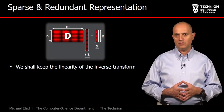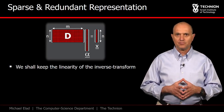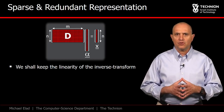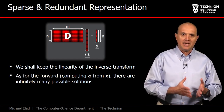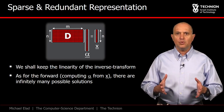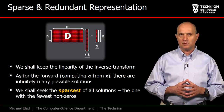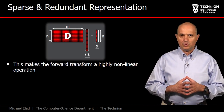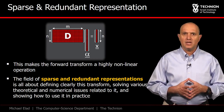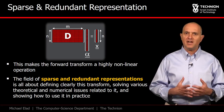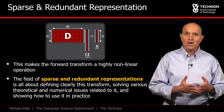All this brings us back to our story. We shall keep the structure and linearity of the inverse transform intact, and revisit the choice of the forward transform — computing α from x. Thinking in terms of a linear system of equations where D and x are known, there are infinitely many possible solutions for α. Among all these, we shall seek the sparsest of all solutions — the one with the fewest non-zeros. Clearly, seeking the sparsest solution implies that the forward transform is a highly non-linear operation. The field of sparse and redundant representations is all about defining clearly this transform, solving various theoretical and numerical issues related to it, and showing how to use it in practice.